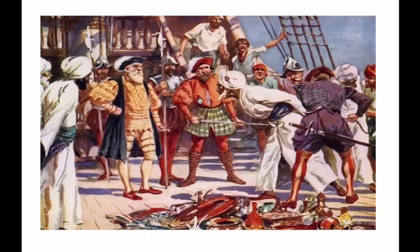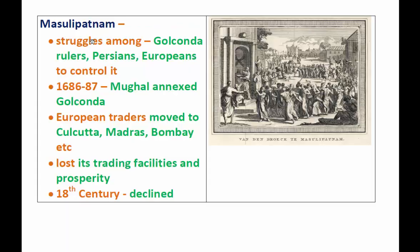There was a struggle among Golconda rulers, Persians, and Europeans to control the port in the late 17th century. The Persians were there for business purposes, and Europeans always struggled among themselves to control it. Around 1686-87, the Mughals annexed Golconda, defeated its king, and it became part of the Mughal Empire, most probably during the time of Aurangzeb.